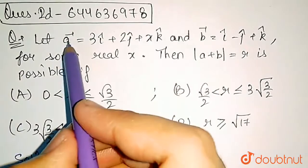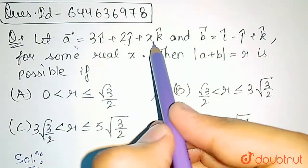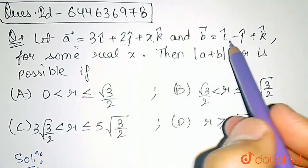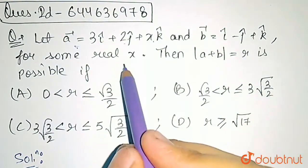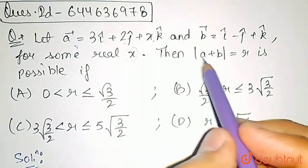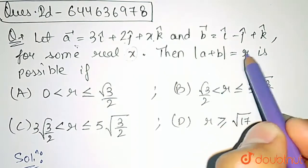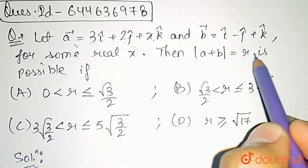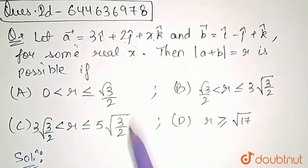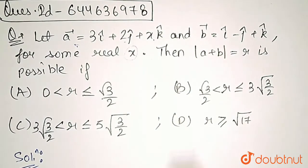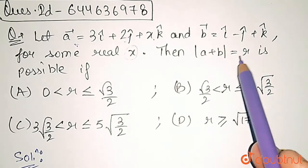In this question, vector a is given as 3i plus 2j plus xk. Vector b is given as i minus j plus k. For some real x, the magnitude of a plus b is equal to r. We need to identify which condition about r is true, so basically we need to find the range of r.